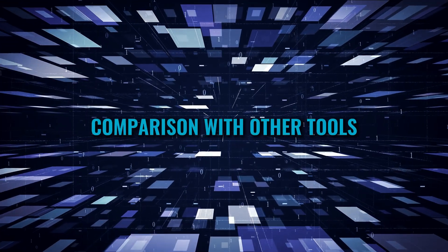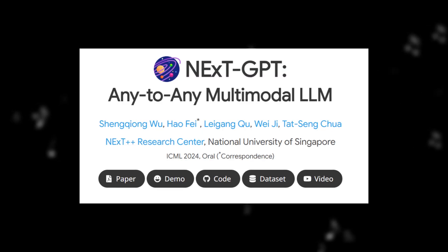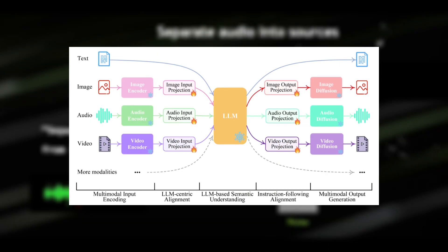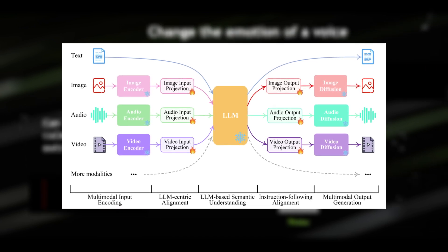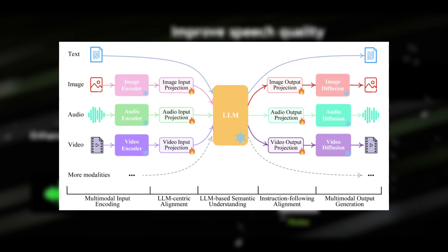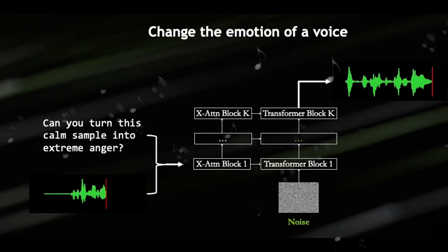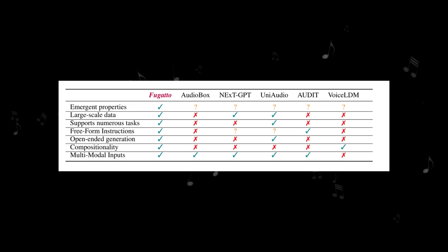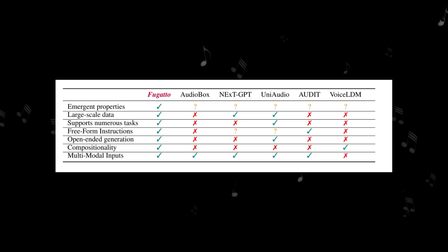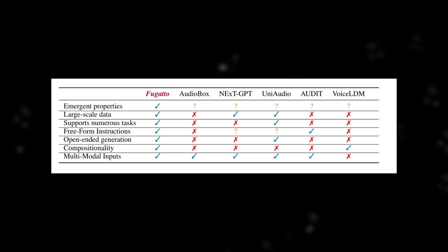Comparison with other tools. There are various other AI audio tools already out there, like NextGPT, which allows you to input any form of media including audio, and can help you transform it or create basic audio for a specific input. There's also Audiobox and UniAudio doing the same thing, but none are claiming to create completely new sounds that have never been heard before, which gives Fugato the edge even before being launched. Emergent properties are only available in Fugato, and even besides that, Fugato clearly has the edge over its competitors.